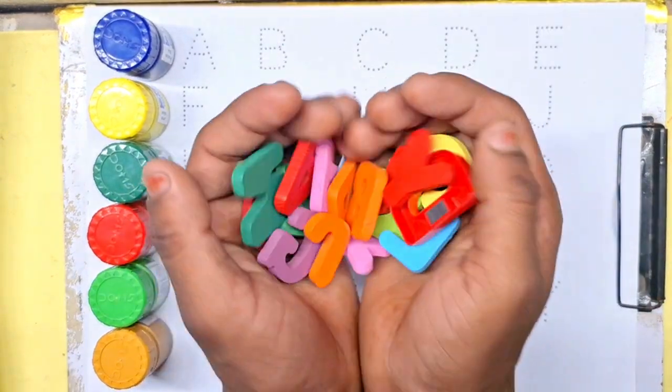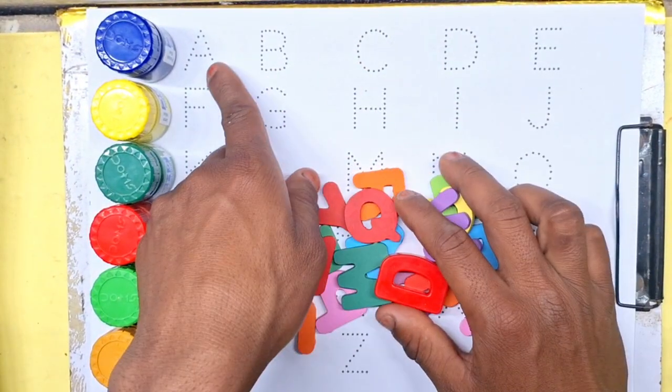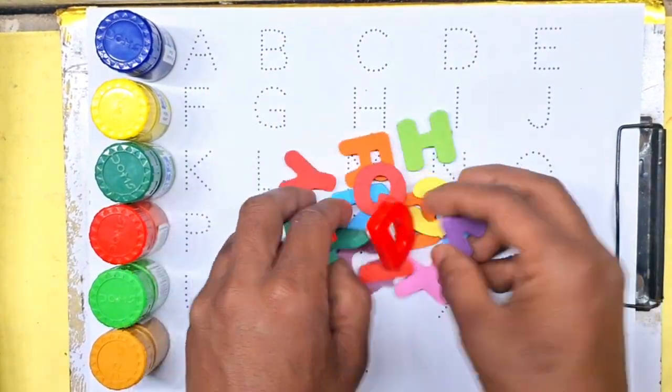Hello kids, let's learn alphabet A to Z. A for apple, B for ball.